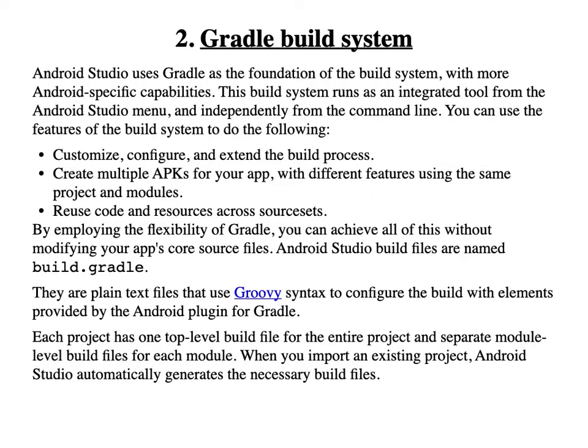By employing the flexibility of Gradle, you can achieve all of this without modifying your application's core source files. Android Studio build files are named build.gradle — they are plain text files that use Groovy syntax to configure the build with elements provided by the Android plugin for Gradle. Each project has one top-level build file for the entire project and separate module-level build files for each module. When you import an existing project, Android Studio automatically generates the necessary build files.